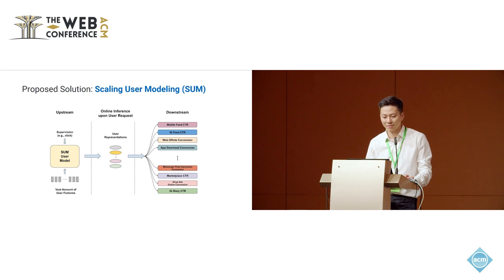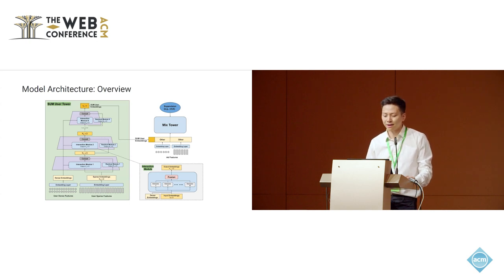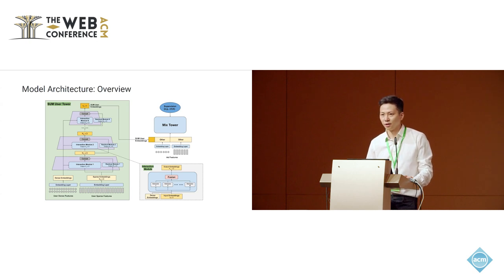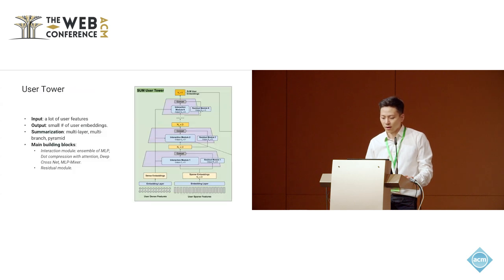These embeddings are then seamlessly integrated into various downstream production models, propagating advanced user modeling with representation sharing in a very efficient manner. Our model architecture consists of a big user tower, which is the backbone of our model. It takes in a vast amount of user features and outputs several embeddings. Beside the user tower, our model also includes a mixed tower, which takes in embeddings and learns their interaction with other outside features. The whole model is trained end-to-end with backpropagation under diverse supervision such as clicks and conversions. At serving time, only the user tower is served.